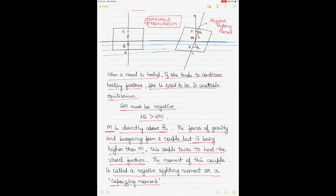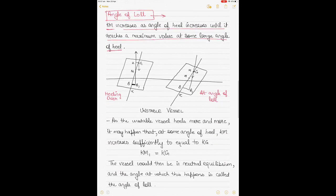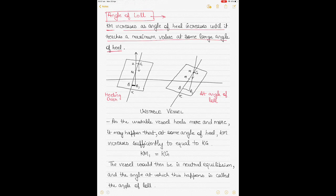As the angle of heel increases, KM — the distance from keel to the transverse metacenter — increases and reaches a maximum value at some larger angle of heel. As the unstable vessel heels more and more, due to the negative righting moment, it may happen that at some angle of heel, KM increases sufficiently to become equal to KG.